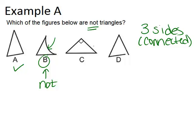C is a triangle, in fact it's a right triangle because it has a right angle. D is not a triangle because of this little gap right here, so D would also be an answer. The answers are B and D.